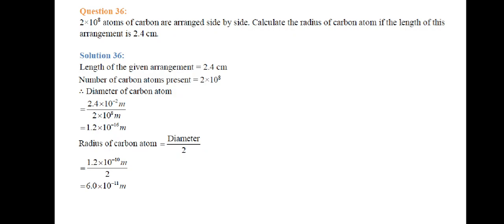Diameter = (2.4 × 10⁻² meters) / (2 × 10⁸) = 1.2 × 10⁻¹⁰ meters. Since radius is half of diameter, radius = (1.2 × 10⁻¹⁰) / 2 = 6.0 × 10⁻¹¹ meters. This is the radius of the carbon atom.